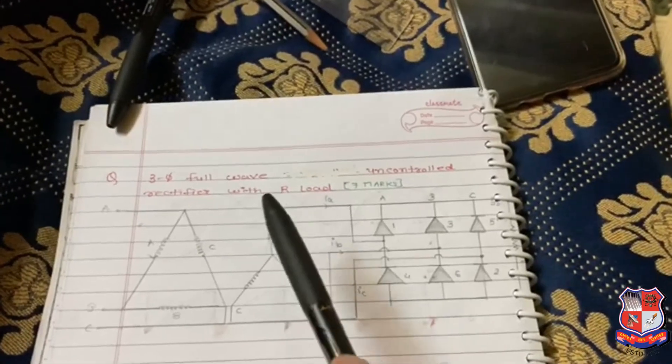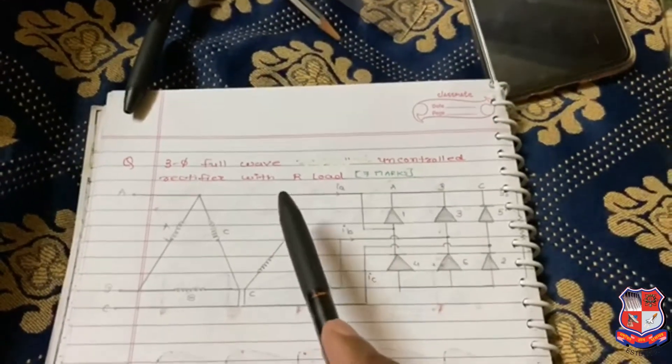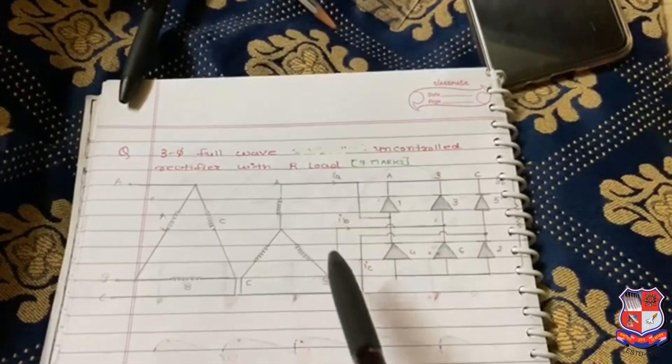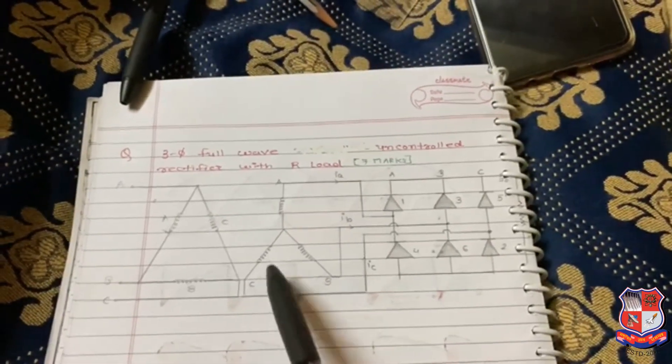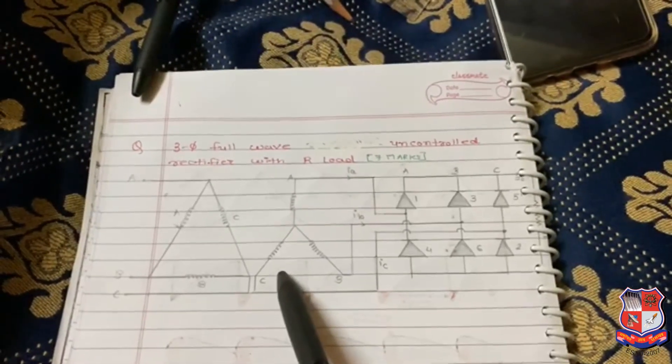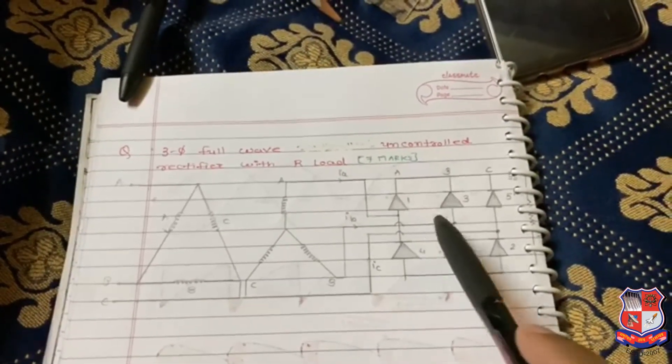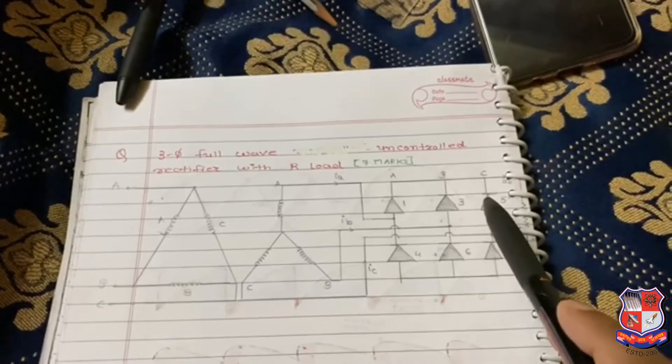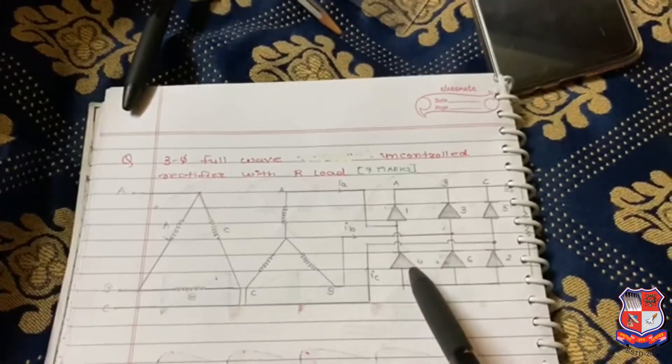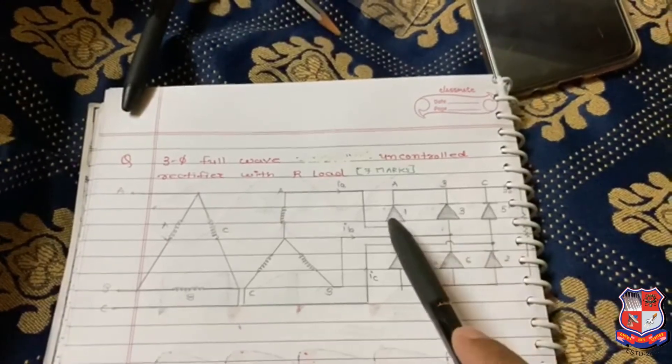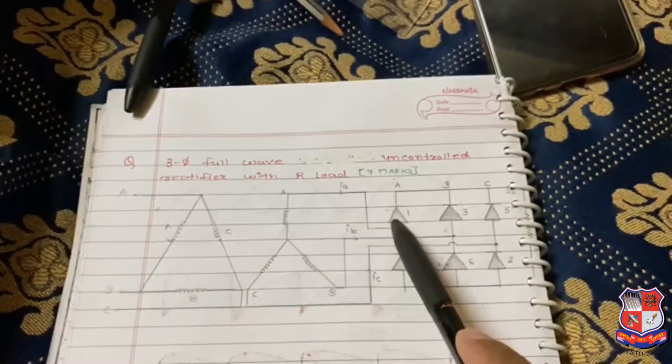So our voltage will be called VCB. Same thing for opposite waveform, we can assume that switch number five and switch number four instead of one are in on condition.